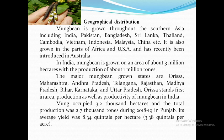The major mung bean growing states are Orissa, Maharashtra, Andhra Pradesh, Telangana, Rajasthan, Madhya Pradesh, Bihar, Karnataka, and Uttar Pradesh. Orissa stands first in area, production, as well as productivity of mung bean in India. Mung bean occupied 3.2 thousand hectares with total production of 2.7 thousand tons during 2018–19 in Punjab. Its average yield was 8.34 quintals per hectare.